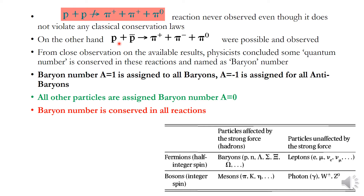Whereas the reaction proton plus anti-proton (p + p̄) producing π⁺ + π⁻ + π⁰ was possible and was observed many times. From such similar reactions, scientists concluded that some special quantum number is conserved in these reactions, and they named it the baryon number.